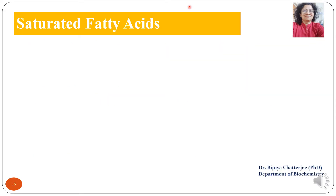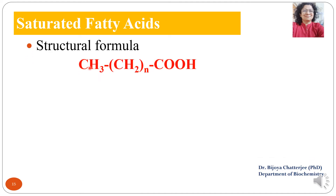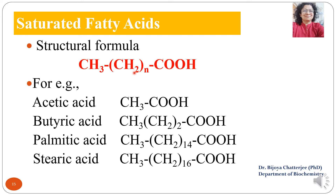Now we discuss saturated fatty acids. The structural formula is CH₃-(CH₂)n-COOH, where n can be 0 to N number of CH₂ groups. Examples include acetic acid, butyric acid, palmitic acid, and stearic acid, all having different numbers of CH₂ groups. Acetic acid has no CH₂ groups, butyric acid has 2, palmitic acid has 14, and stearic acid has 16.